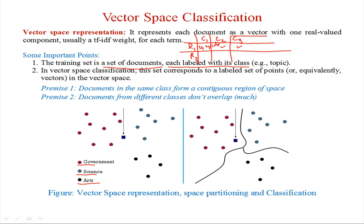This is the requirement for text classification — we initially have such information. In vector space classification, this set corresponds to a labeled set of points in the vector space. For each label, we will have a vector space with word and TF-IDF representation.